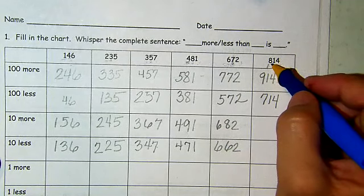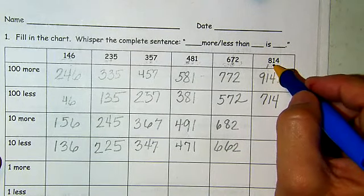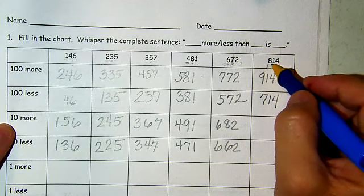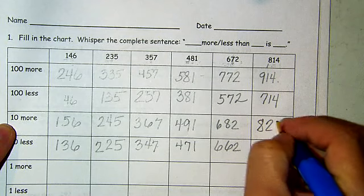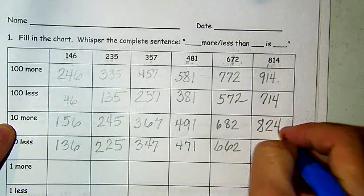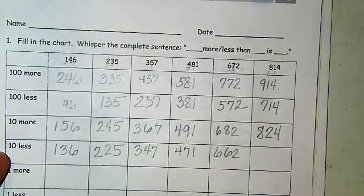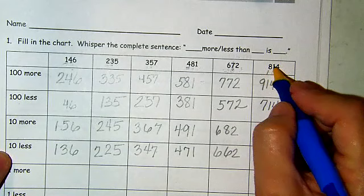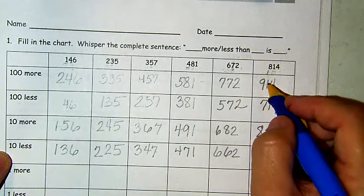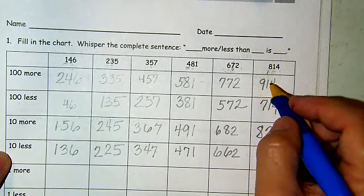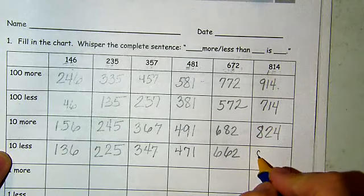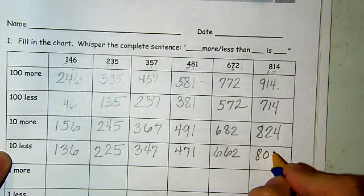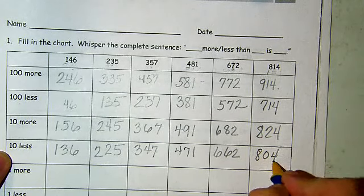814 — we have a one in the tens place. If I add another 10, that's going to be a two — so 824. Now 10 less: we have 10 and we're going to take 10 away, that's going to be a zero — 804. We have 804.